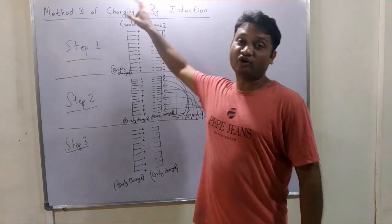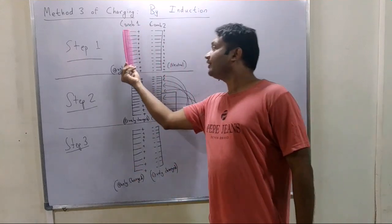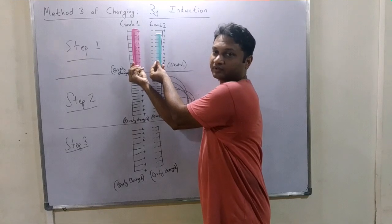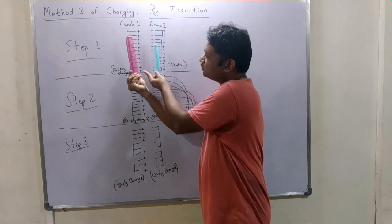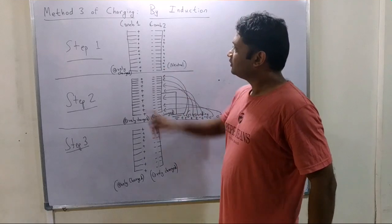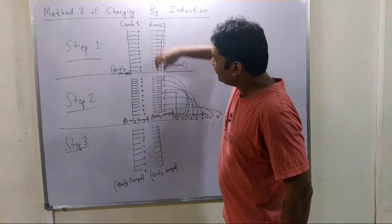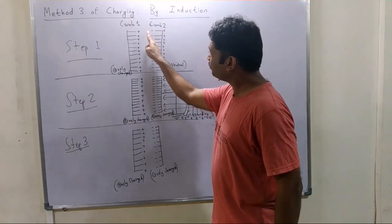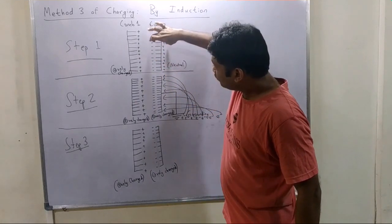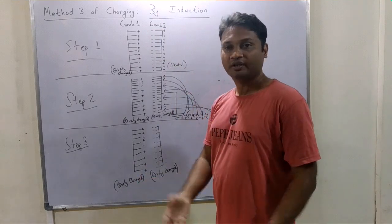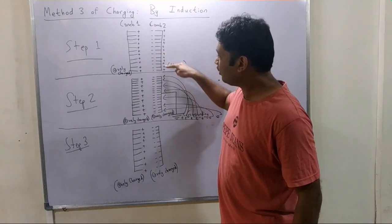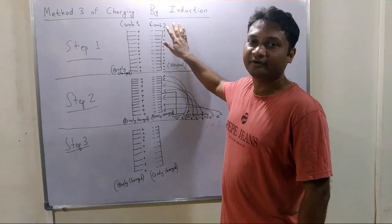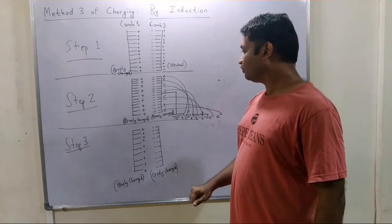The third method of charging is by induction. We had a positively charged pink comb. If I bring a neutral blue comb nearby, the electrons of the blue comb are attracted towards the positive charge of the pink comb. The electrons move to that side, so the opposite side of the blue comb acquires positive charge. However, the blue comb is still neutral overall, since the amount of negative charge equals the amount of positive charge.